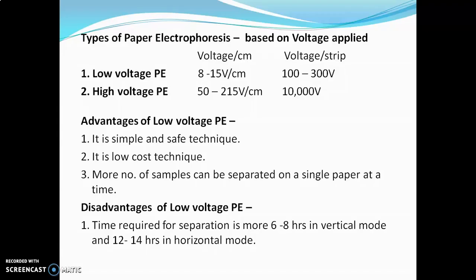Vertical and horizontal are also types of paper electrophoresis. Another disadvantage is that diffused sample bands may appear. In the case of low molecular weight samples, the separated sample bands may be diffused. This is a disadvantage of low voltage paper electrophoresis.